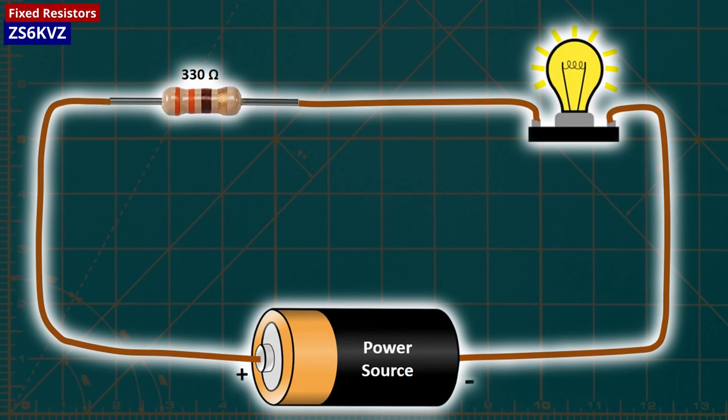When we connect the same power source to the lamp with a 330 ohms resistor, the brightness of the lamp is slightly reduced as less current will flow through the circuit. When we connect a higher resistor, such as a 470 ohms resistor, the current will reduce even further, resulting in a slightly dimmer lamp.